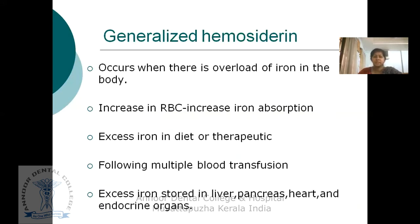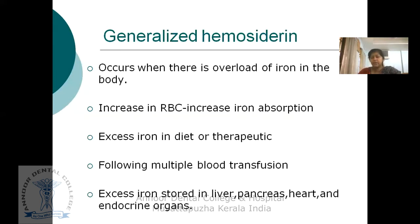Generalized hemosiderin pigmentation is seen due to overload of iron in the body. This occurs when there is increased RBC production causing excess iron absorption, excess iron in the diet, therapeutic iron supplementation, or following multiple blood transfusions. The excess iron may get stored in the liver, pancreas, heart, and endocrine organs, causing pigmentation.